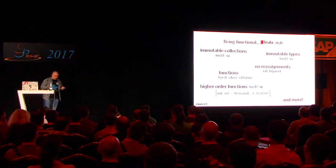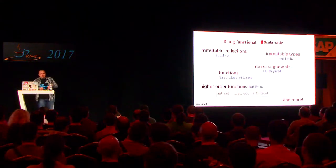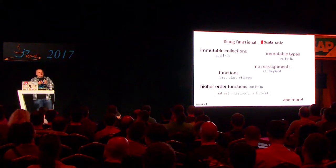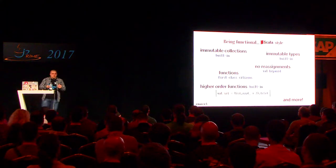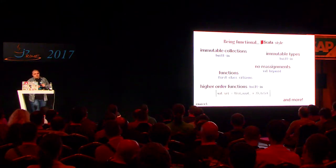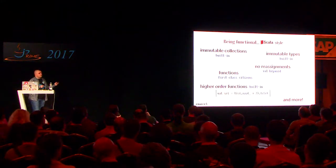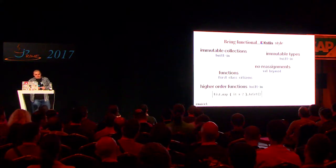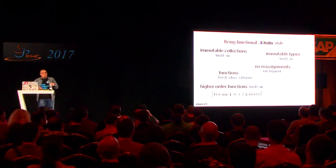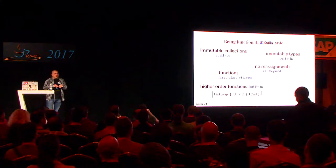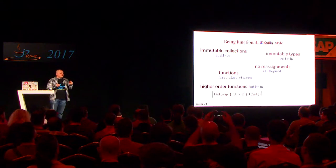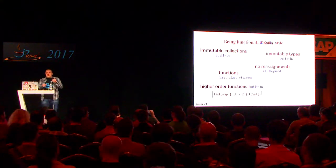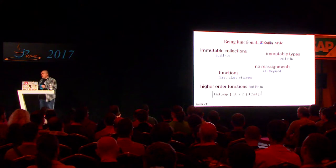The same thing cannot be said about Scala. In Scala, everything is built into the language — immutable collections, less verbose higher-order functions, the val keyword, and immutable types via the case class notation. In terms of basic functional programming, Kotlin is very similar to Scala: we can create immutable types and have nice higher-order APIs. But there are some differences at more advanced levels, which I'll show you during this talk.